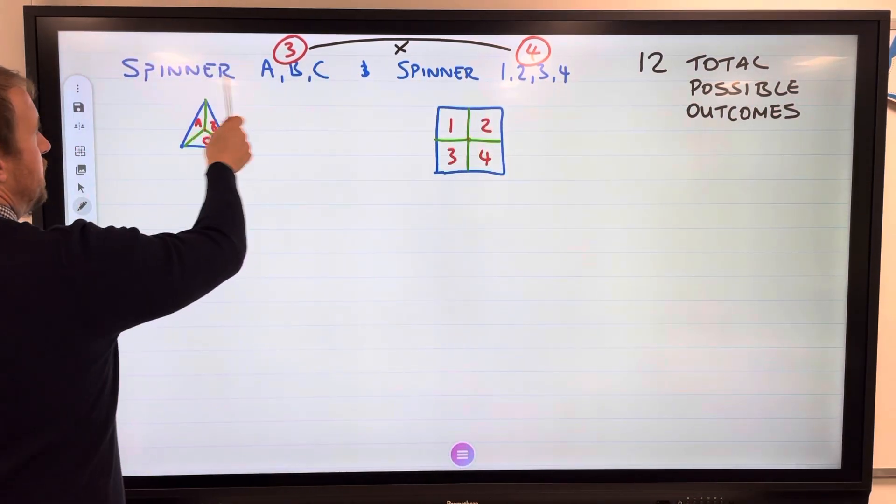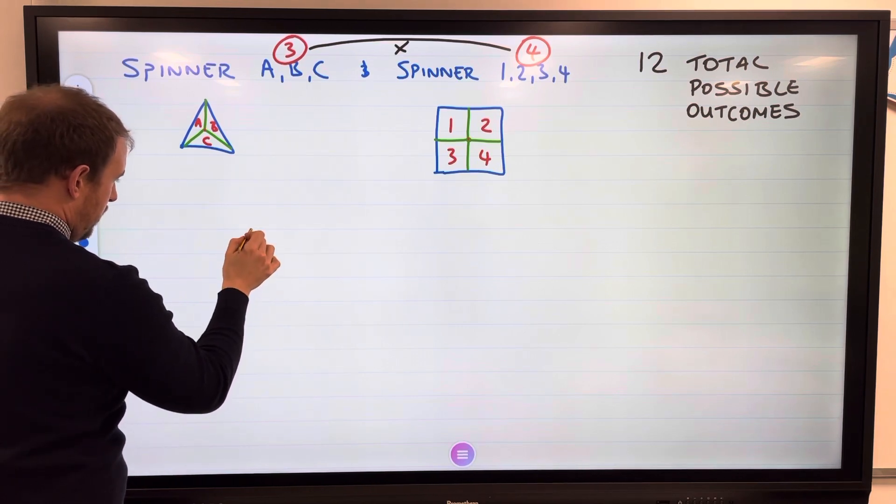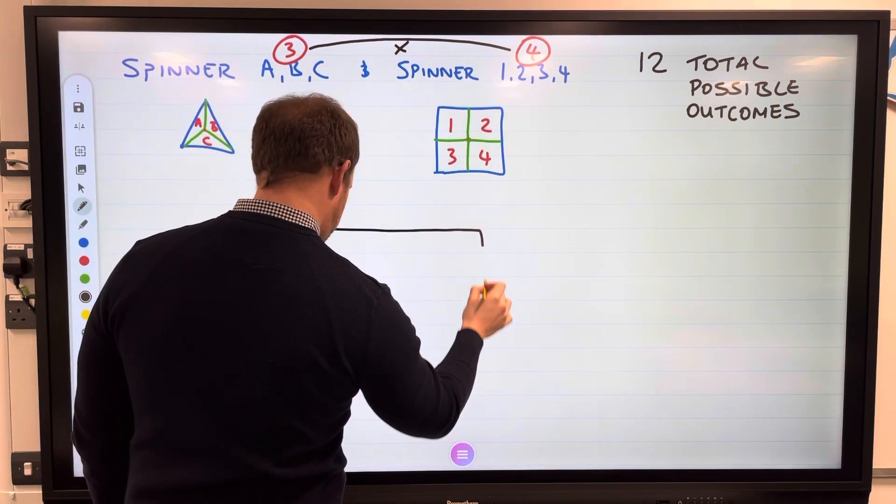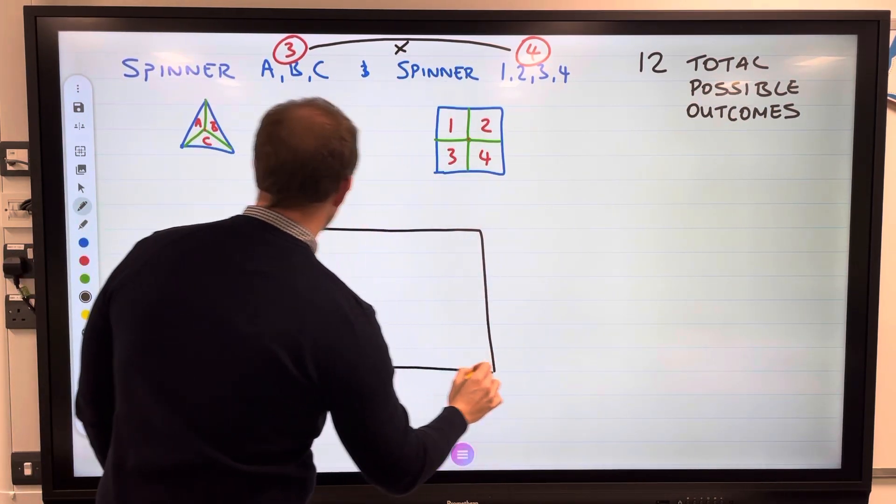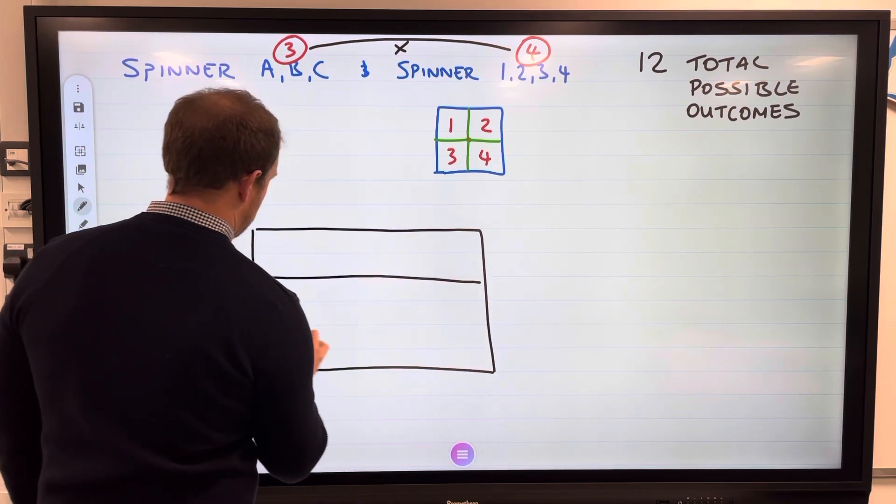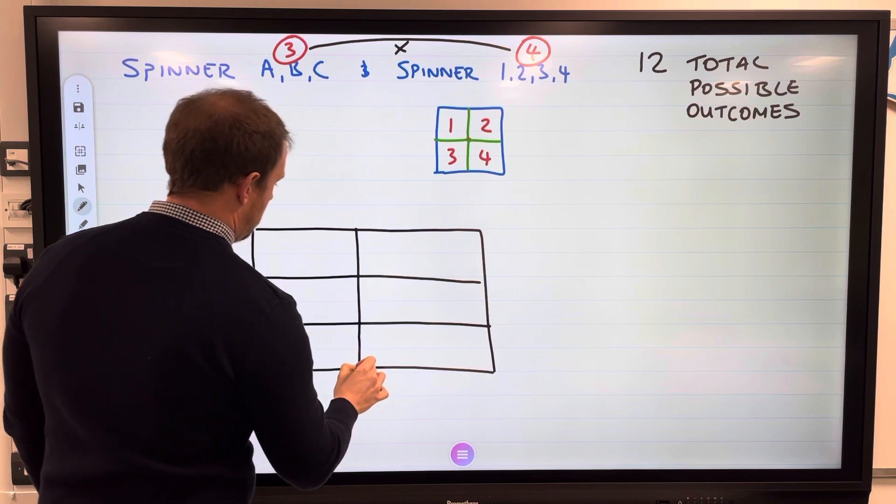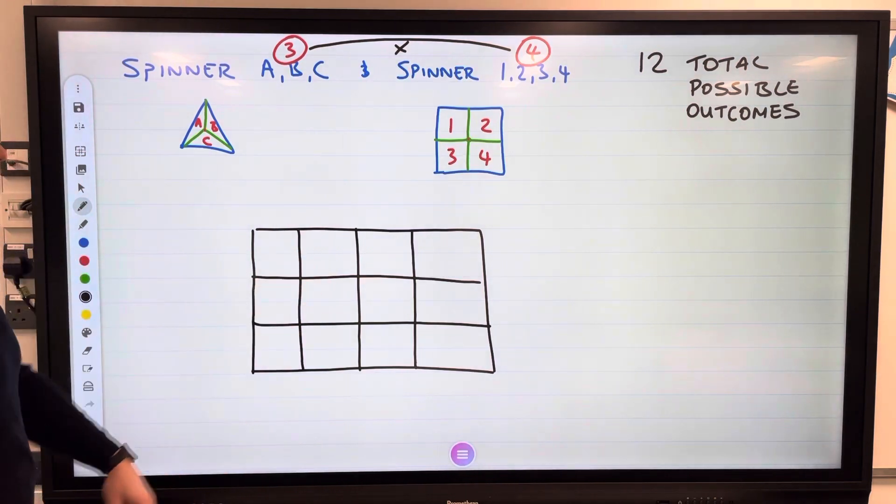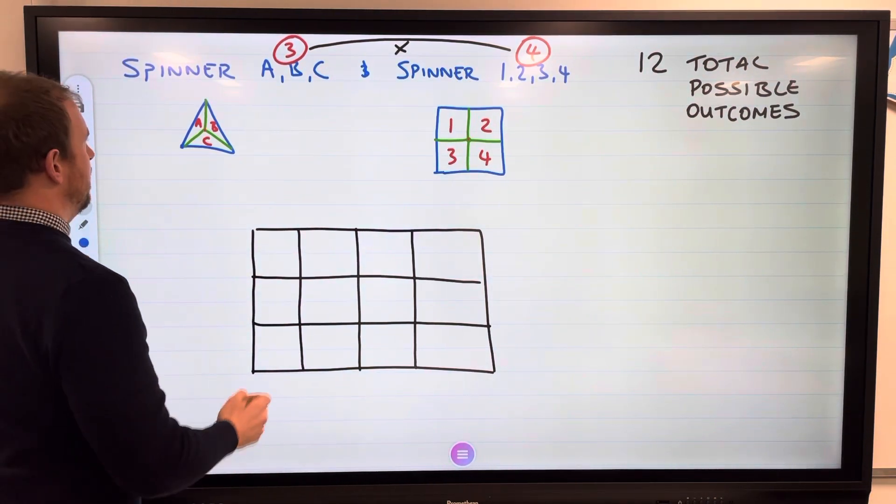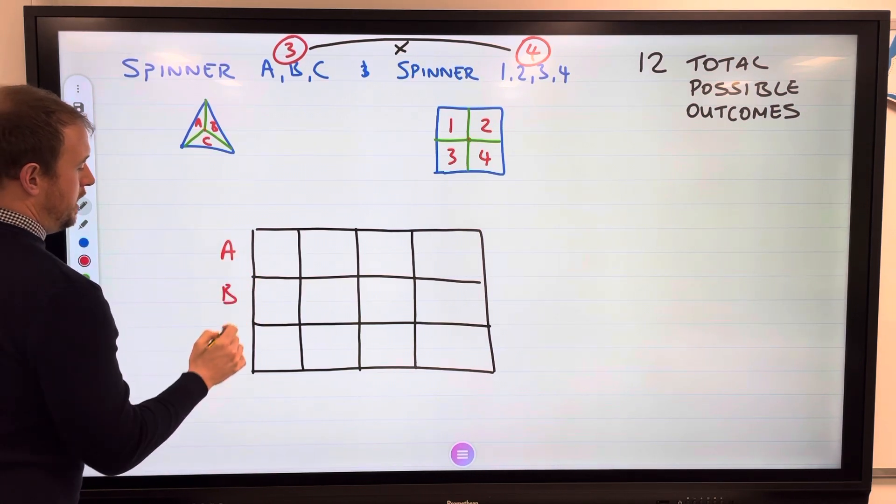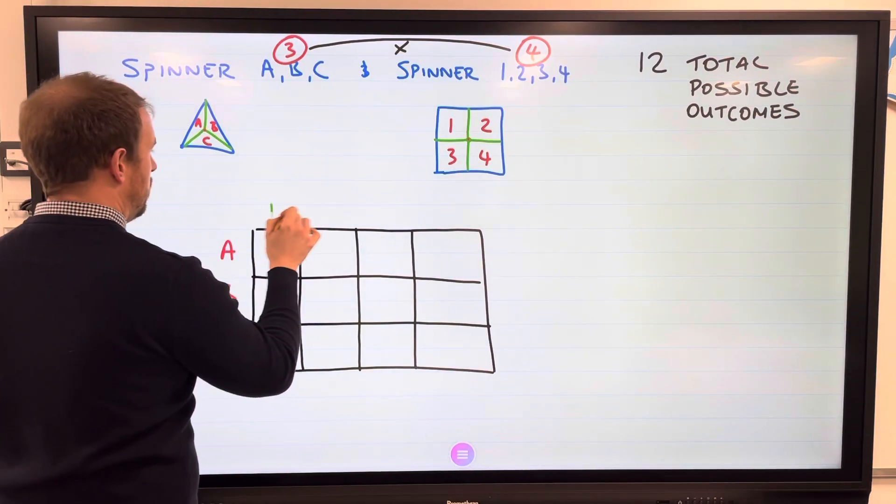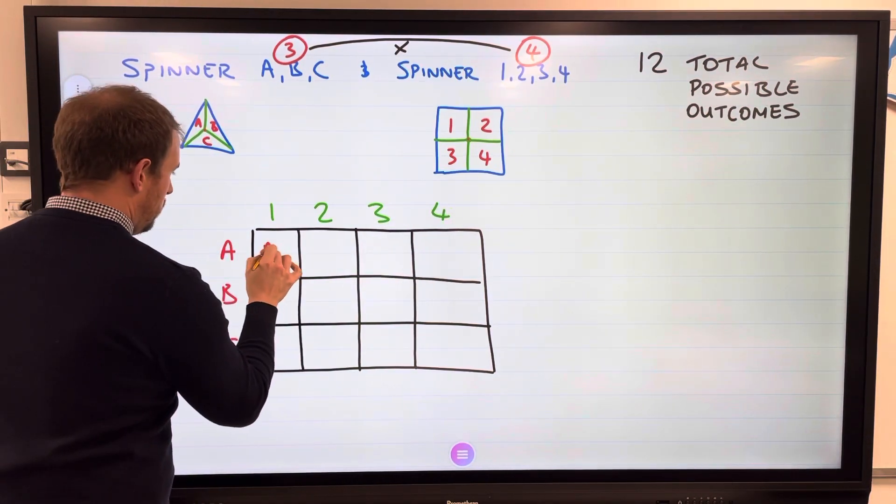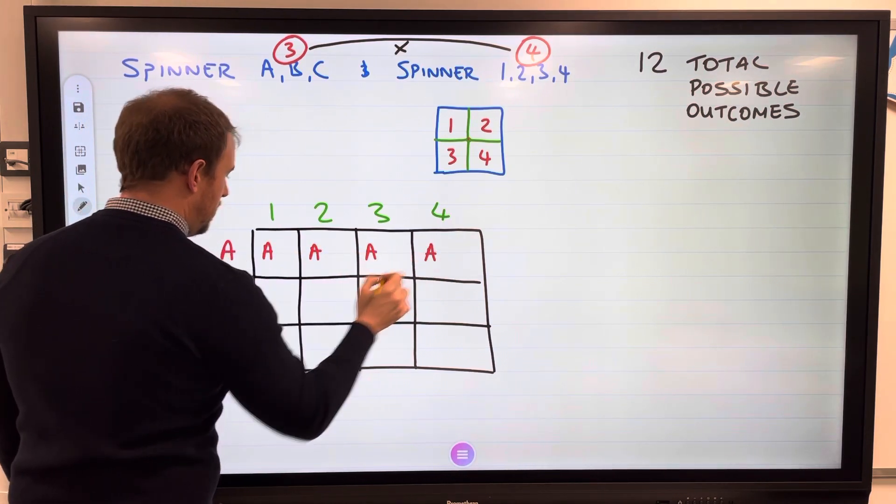We draw a table. This spinner has three, so for our first one we're going to have three going down, and we have four going across. It's a big table - obviously you're going to use a ruler. Twelve squares, twelve possible outcomes. We need to start filling it in. First spinner was A, B, C. Second spinner was one, two, three, four.